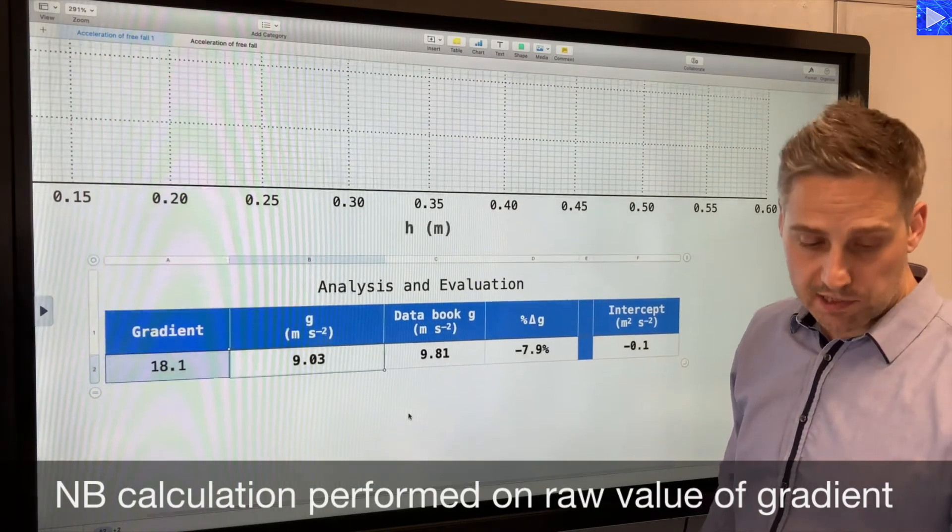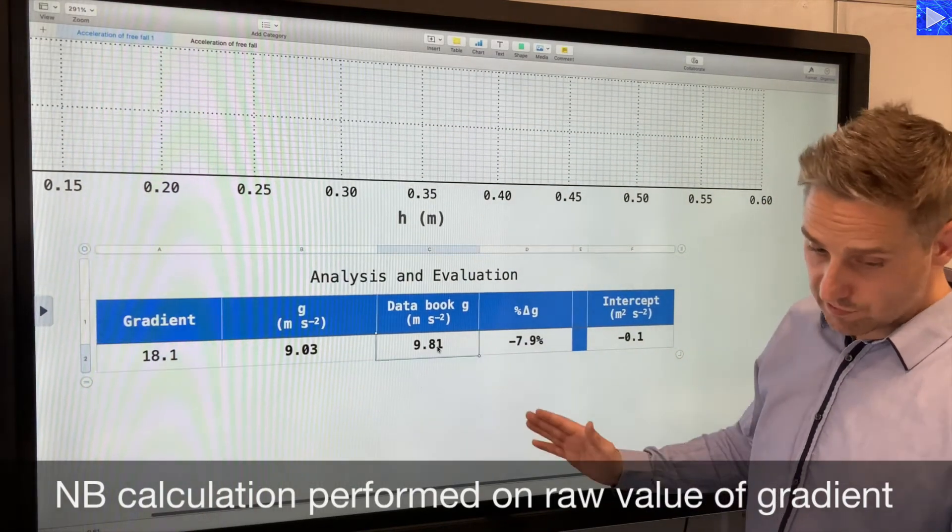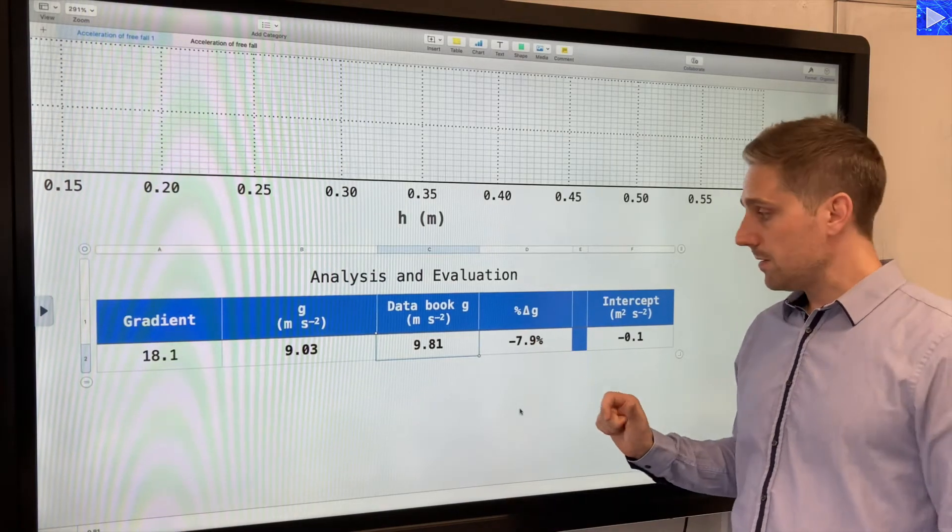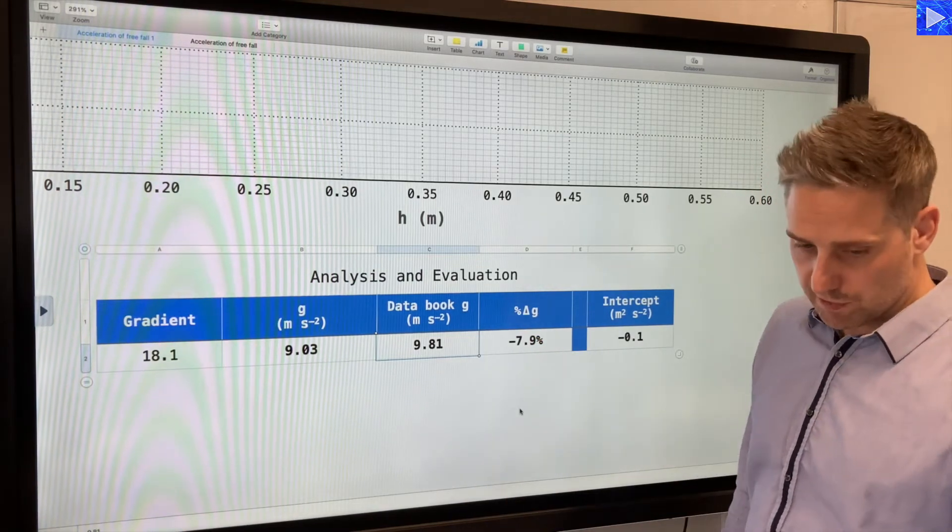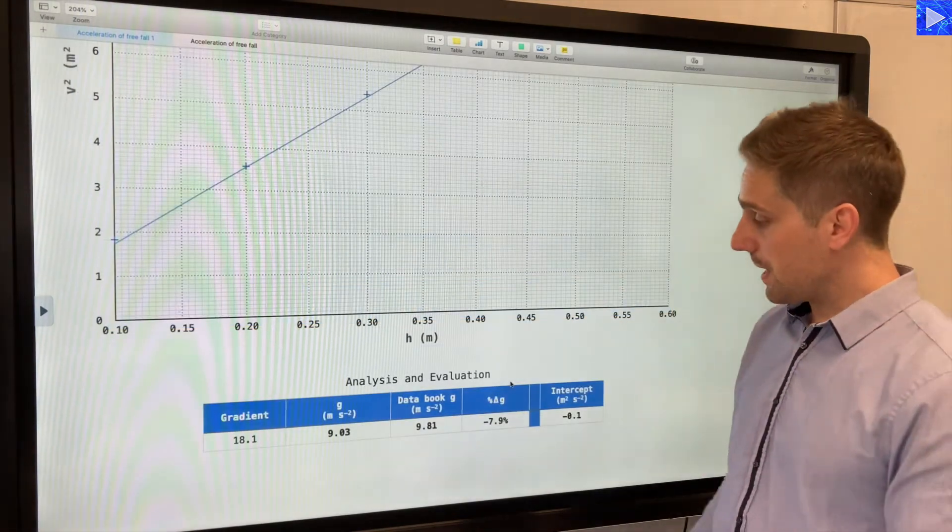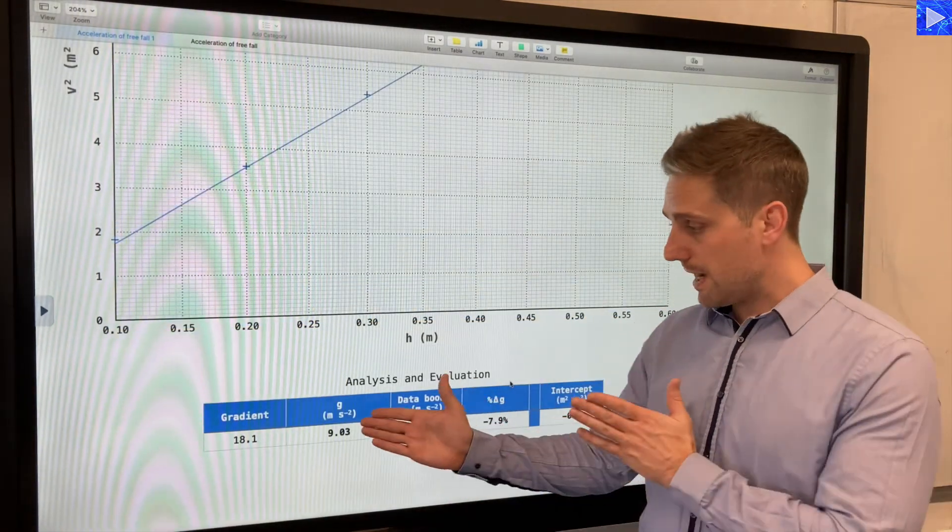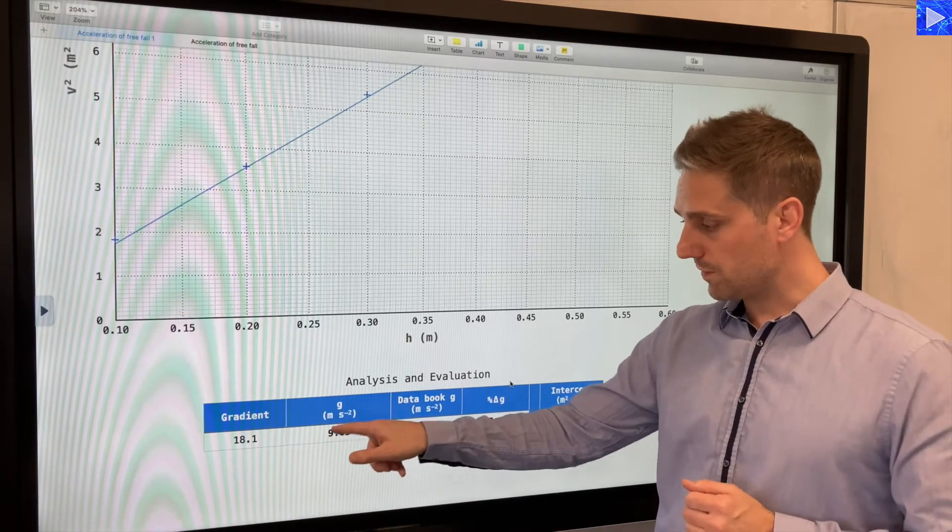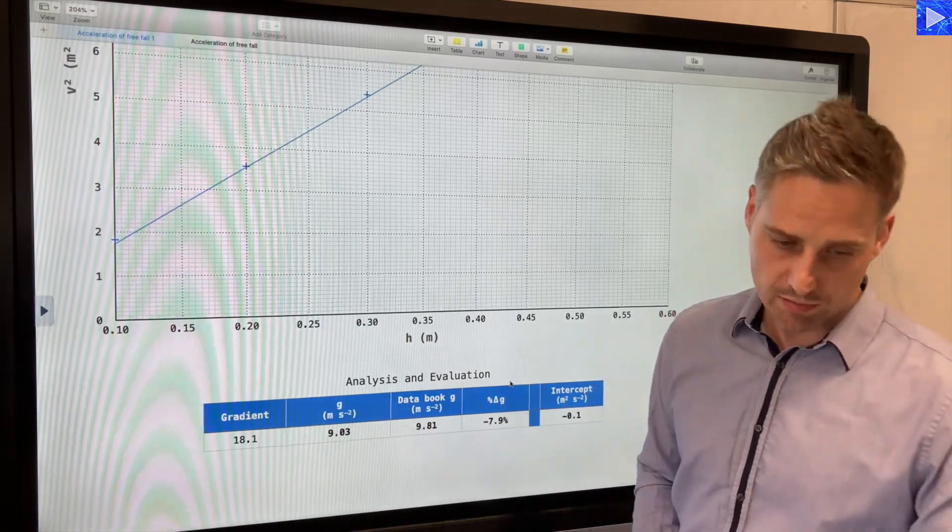As you know, the data value of g is to 3 significant figures, 9.81. That gives us a 7.9% difference. So there we go, that's the analysis. When you do that yourself, hopefully you will. That's the value I got - you should get something close to 9.03.